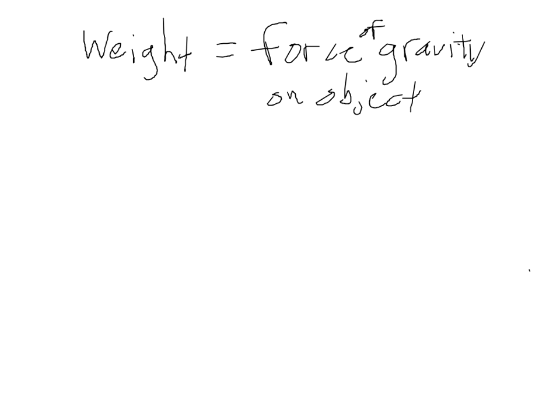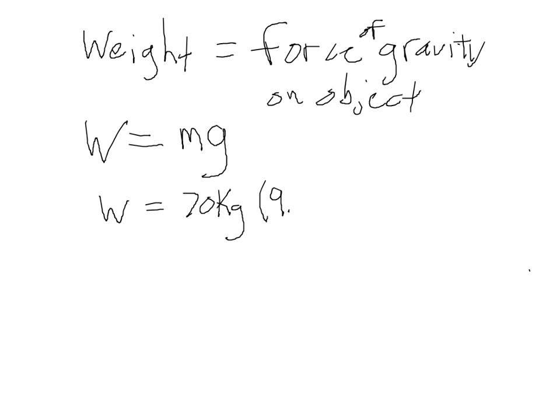We give weight the symbol w, and it equals the person's mass times gravity. Mass is measured in kilograms, gravity in meters per second squared, so weight in the metric system is measured in Newtons. Somebody like me who has a mass of approximately 70 kilograms would have a weight of 70 kg times 9.8 m/s², which is approximately 700 Newtons.